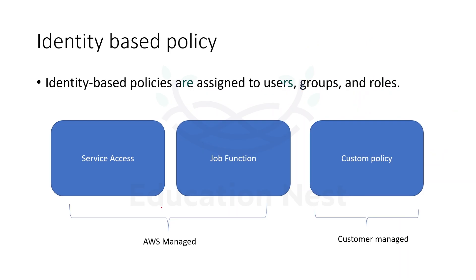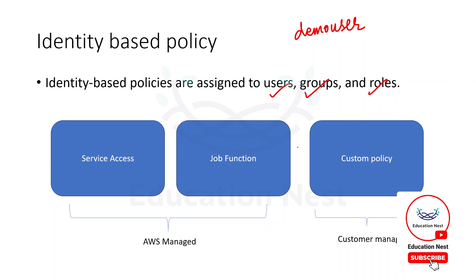Let's get started with identity-based policies. The policy that we attach to a demo user — that was an identity-based policy. As the name suggests, it can be attached to some identity. Identities are nothing but users, groups, or any kind of roles that we create on AWS, and these policies can be attached to them.